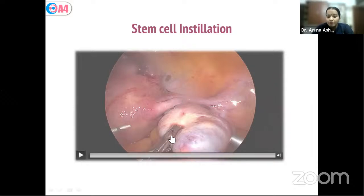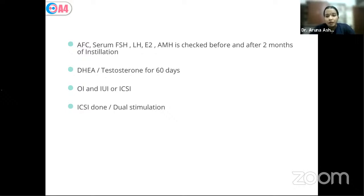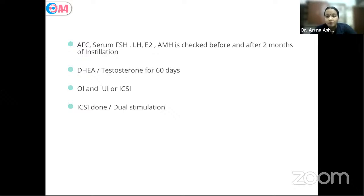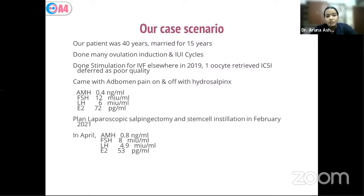Before and two months after stem cell installation, antral follicle count, serum FSH, LH, E2, and AMH are measured. A two-month waiting period follows the installation. Patients with functional tubes can try natural conception — literature cites cases of natural pregnancy. However, our patients are mostly over 40 and IVF-failed, so they prefer to proceed with IVF. Dual stimulation is advised so that when stem cells are most active and AMH is good, we retrieve maximum oocytes and create embryos for future use.